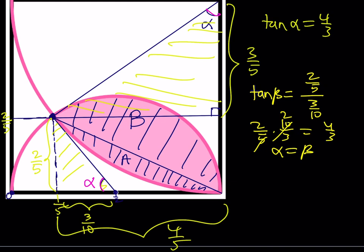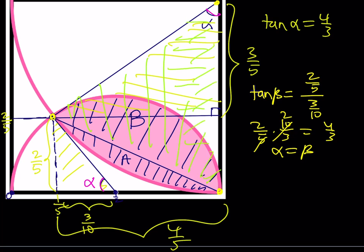We'll find the area of A first, then the area of B. To find area A — it's a bumpy region — we find the area of the circular sector (the quarter-circle sector with angle alpha) and subtract the area of the isosceles triangle formed by the two radii of the quarter circle and the segment connecting regions A and B. That isosceles triangle has two sides of length 1 (the radii). Sector minus triangle gives us A.